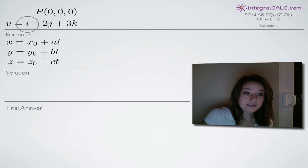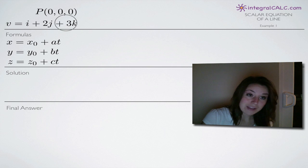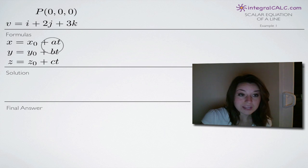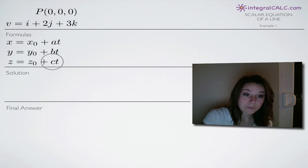And then a, b and c are represented by the coefficients on i, j and k. So in this case, the coefficient on i is one, the coefficient on j is two and the coefficient on k is three. So we're going to be plugging in one for a, two for b and three for c. Really simple.